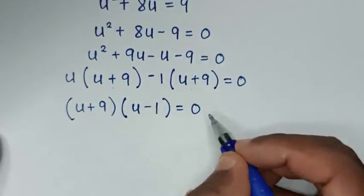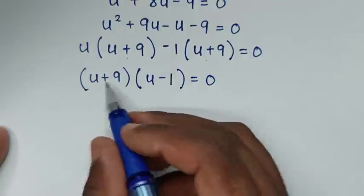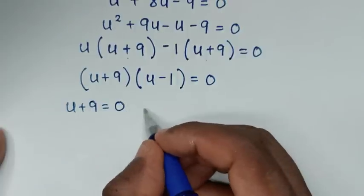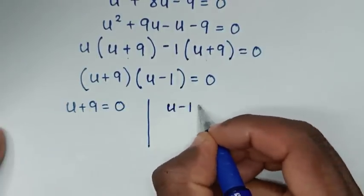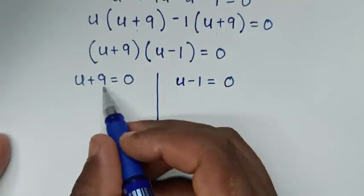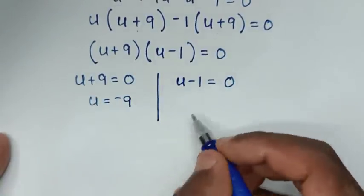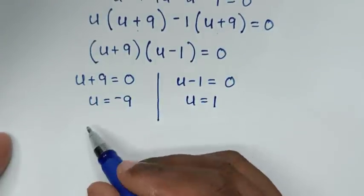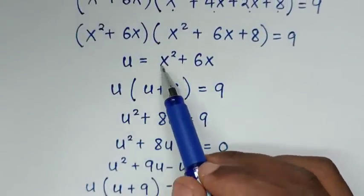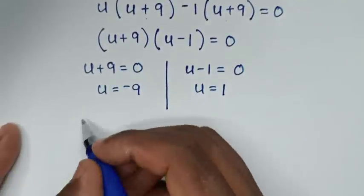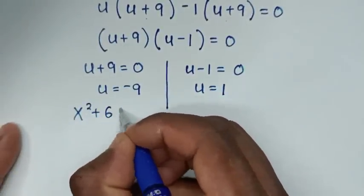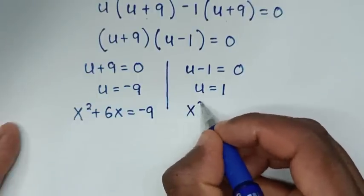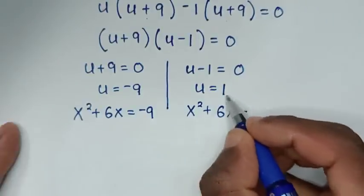We now have two solutions: u+9 = 0 gives u = −9, and u−1 = 0 gives u = 1. Recalling that u = x²+6x, the two cases become x²+6x = −9 and x²+6x = 1.